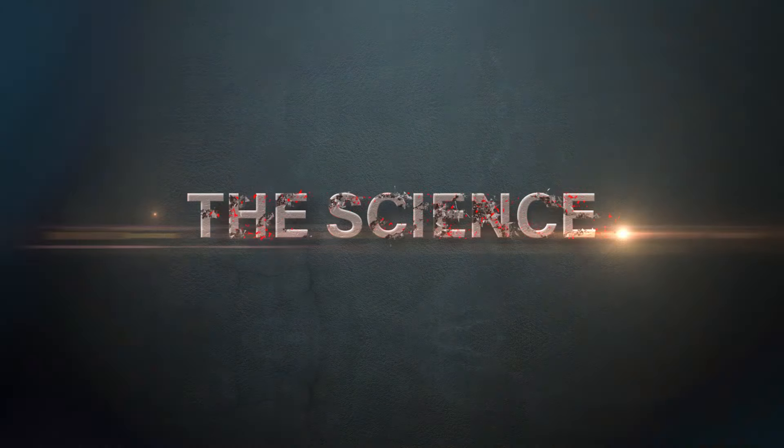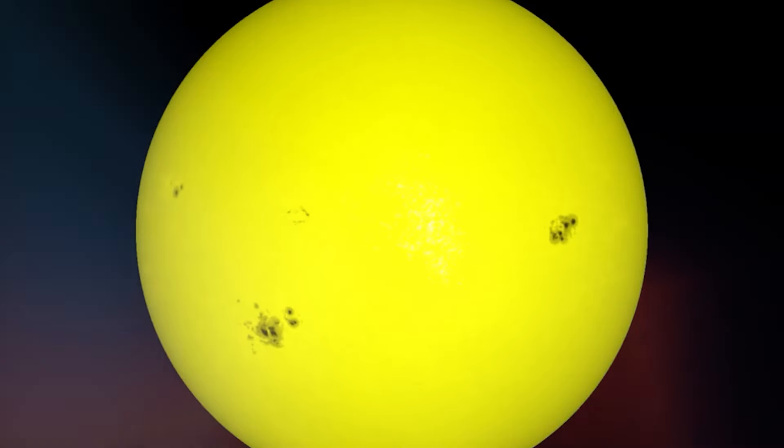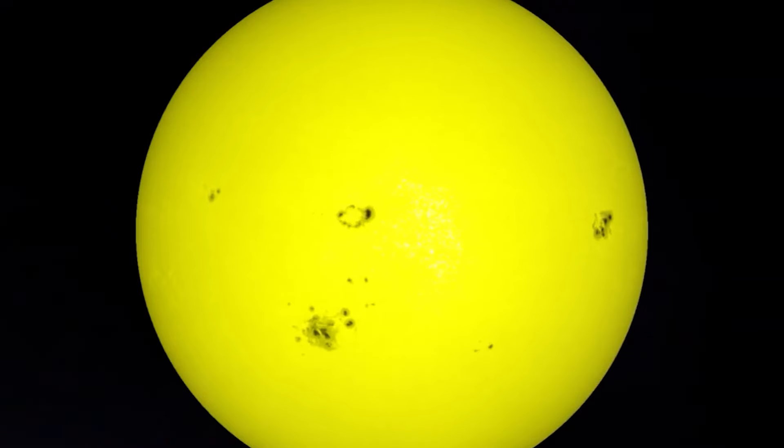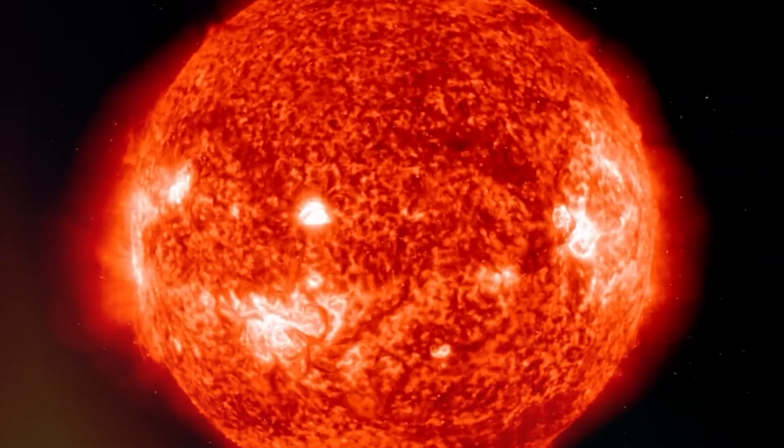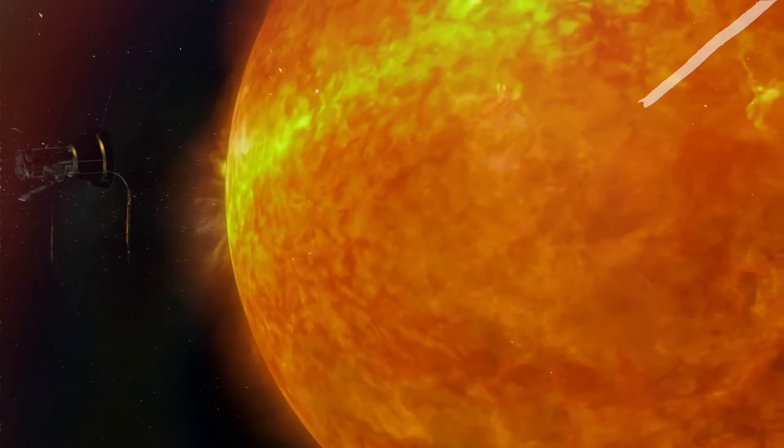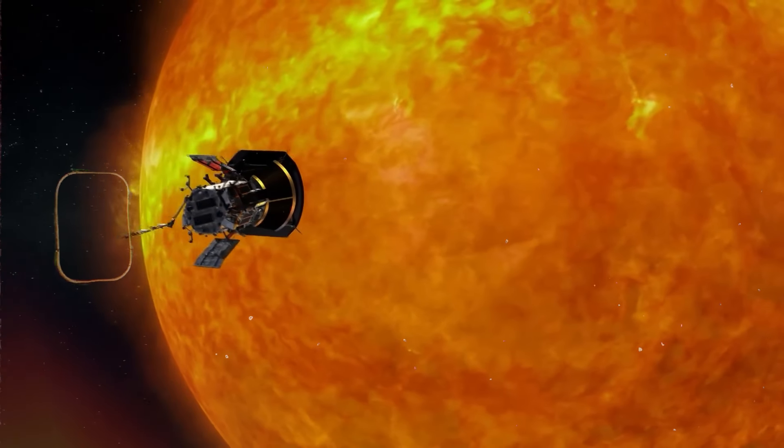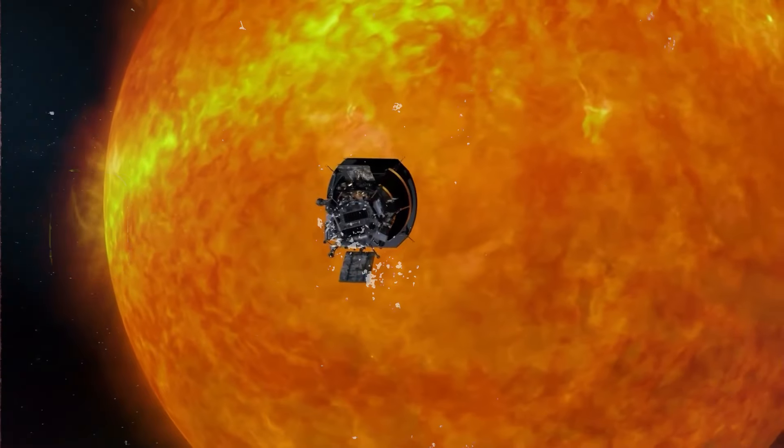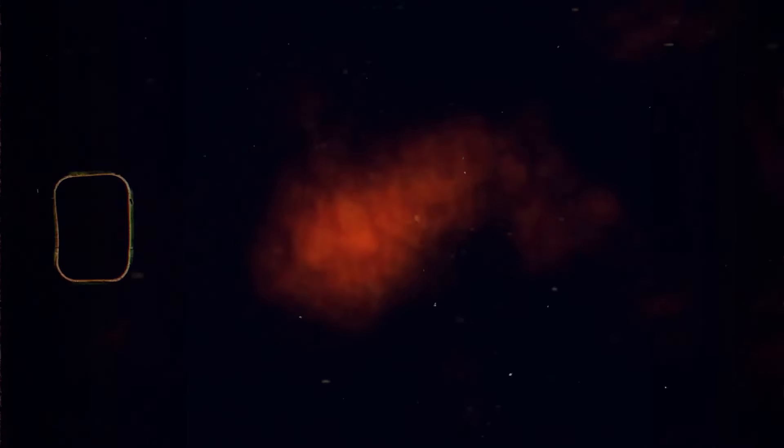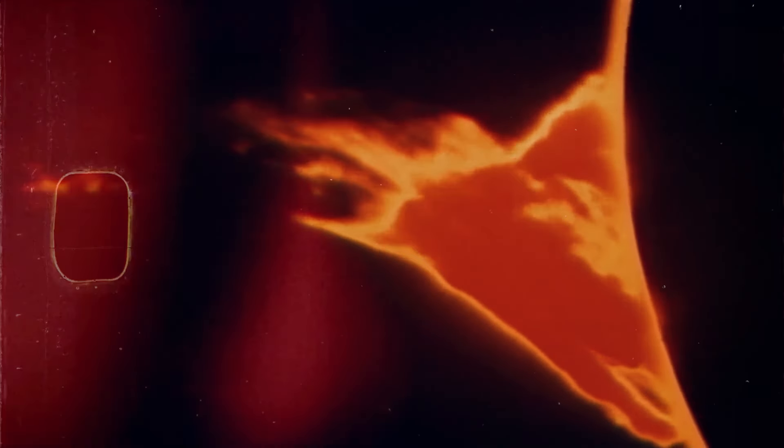The science behind solar activity. The Sun undergoes an approximately 11-year cycle of varying solar activity, driven by the changing magnetic field. This cycle includes periods of solar maximum, characterized by an increased number of sunspots, solar flares and coronal mass ejections, and solar minimum with reduced activity. Solar cycle 25, which began in December 2019, is currently approaching its peak, expected between January and October 2024.